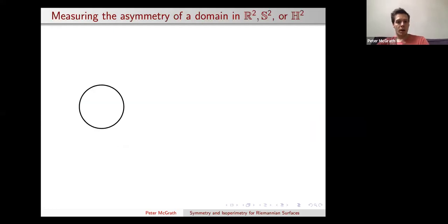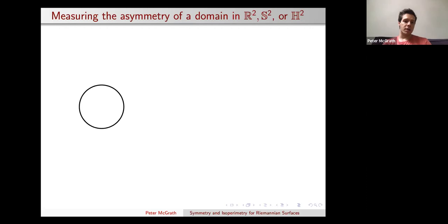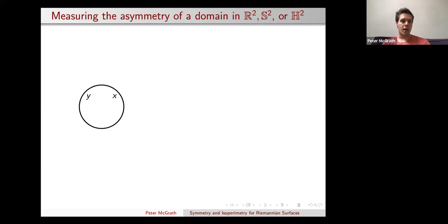Before that, I want to explore a little diversion that motivates some of the work here. I want to play a game: I want to explore the symmetry of the disk and understand what makes the disk optimal in the isoperimetric problem. Working in R², I pick any two points X and Y on the boundary, connect them with a line segment, and take the perpendicular bisector. Because the disk is completely symmetric, that bisector is a line of reflection symmetry of the disk.